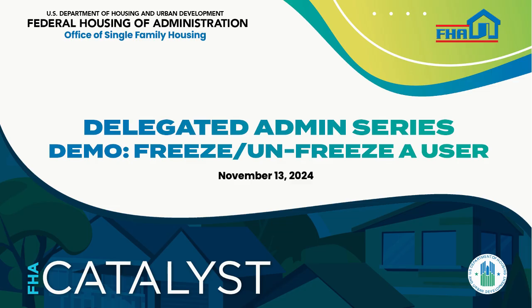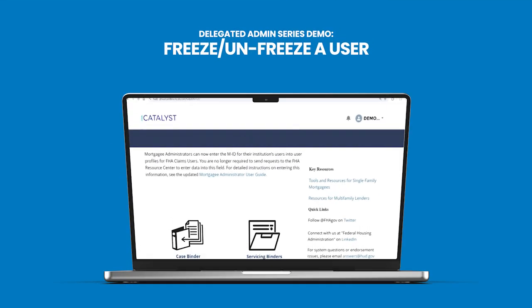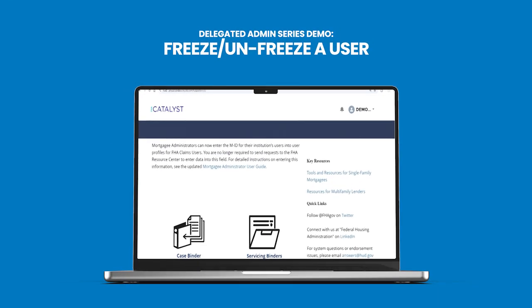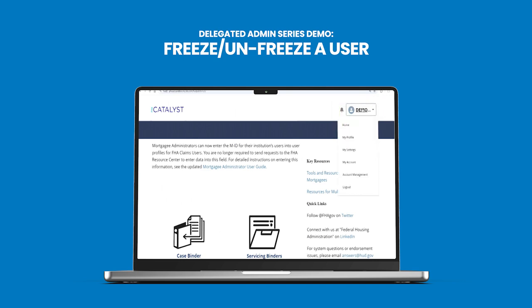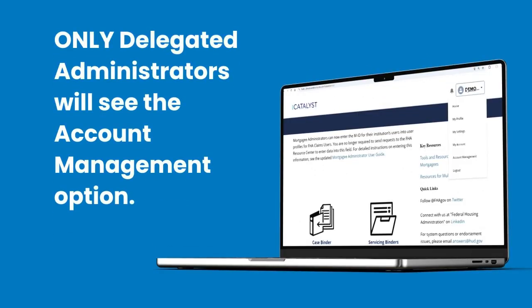Freezing or unfreezing a user. After logging into FHA Catalyst, click your username at the top right. Only delegated administrators will see the account management option. Select it.